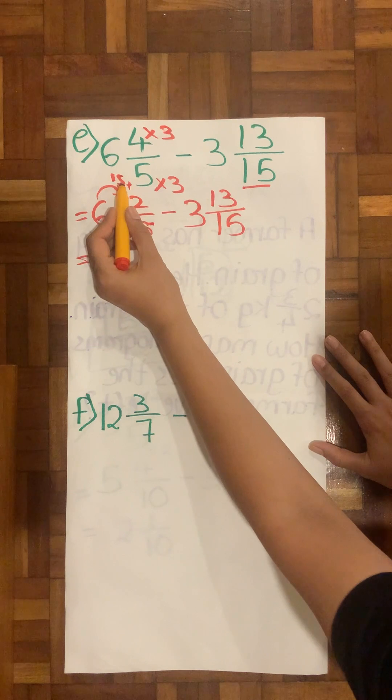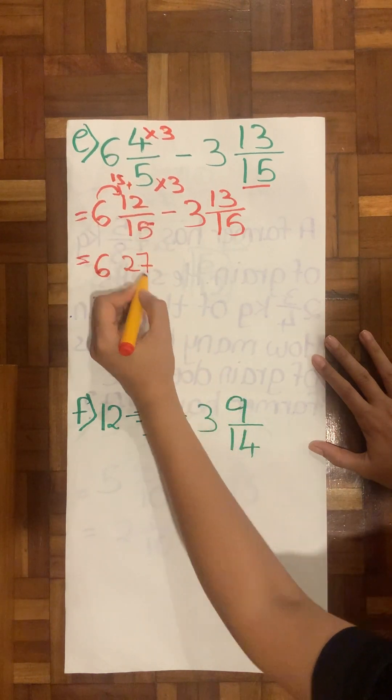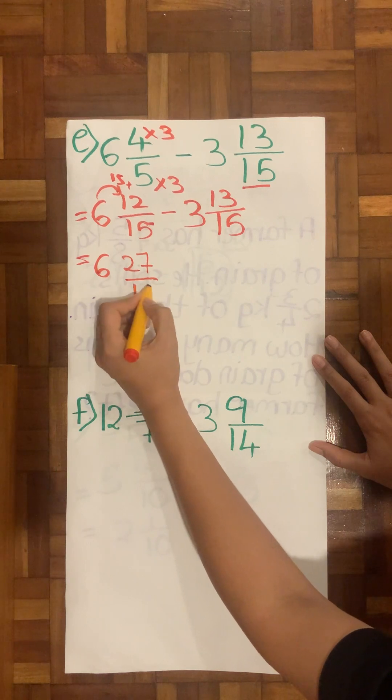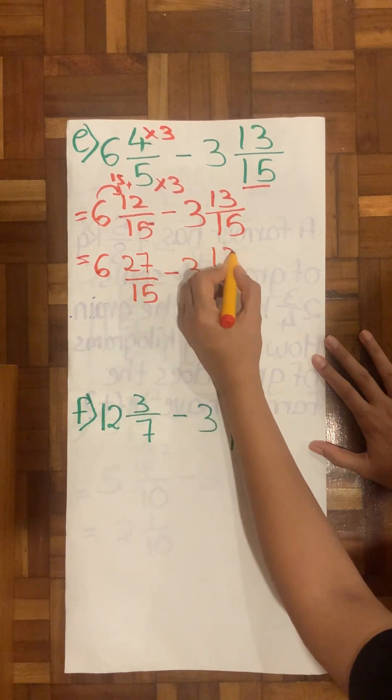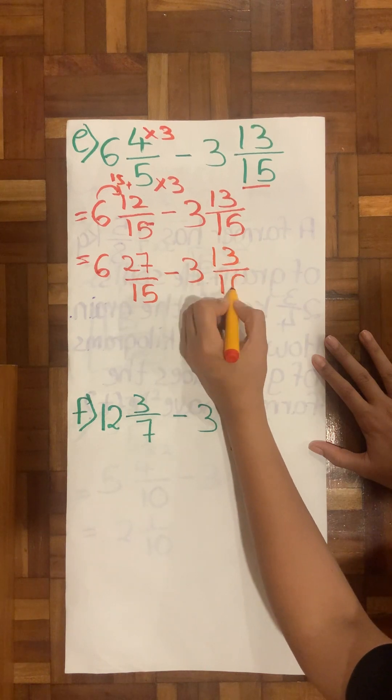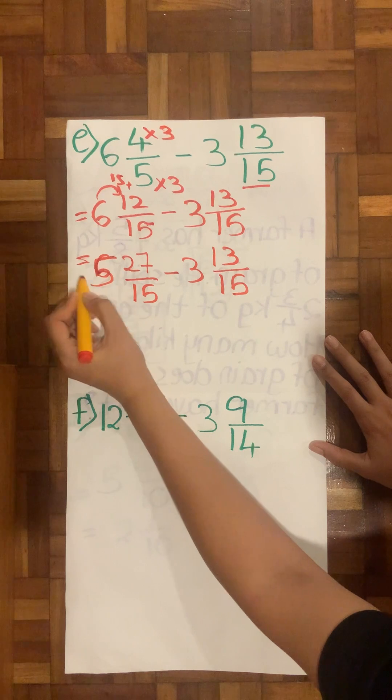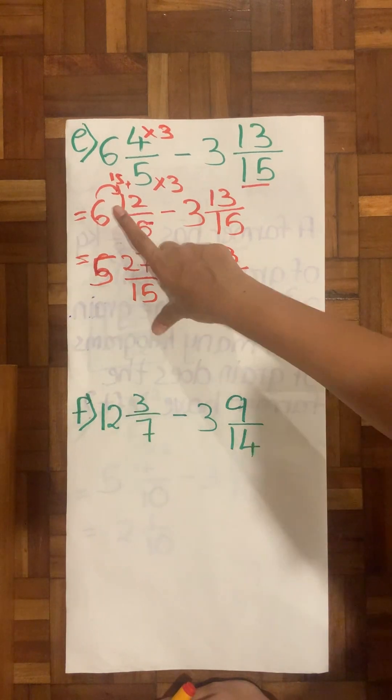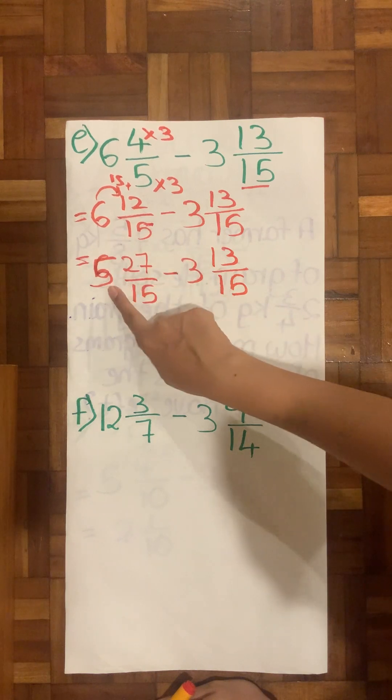And my 6 will make it rich by giving it 15 more, because this time my denominator is 15. These 6 wholes are of 15. Therefore 15 plus 12 is what I will do. So I have 5 plus 1 plus 2 is 7, 1 plus 1 is 2, which becomes 27 over 15 minus 3 wholes 13 over 15. Since 6 gave the 15, this will become 5.